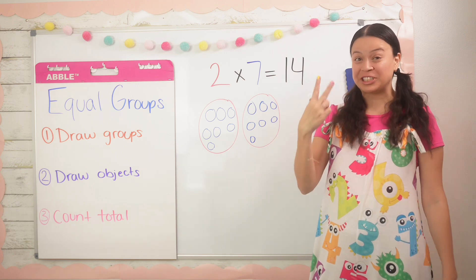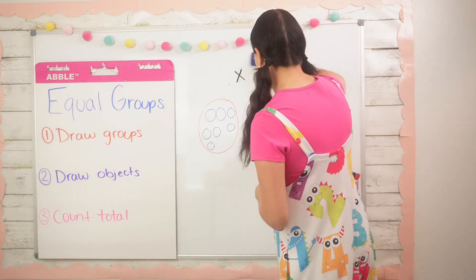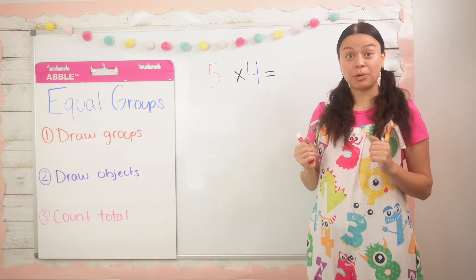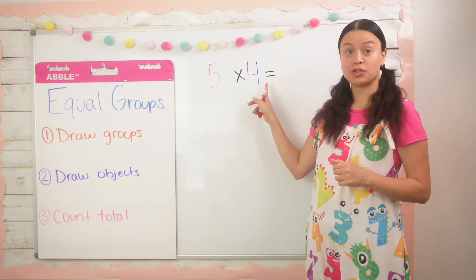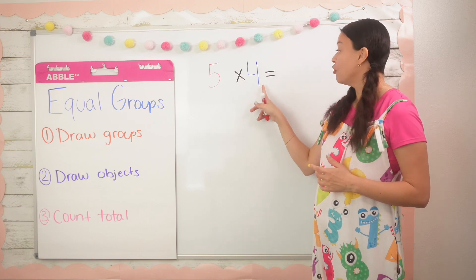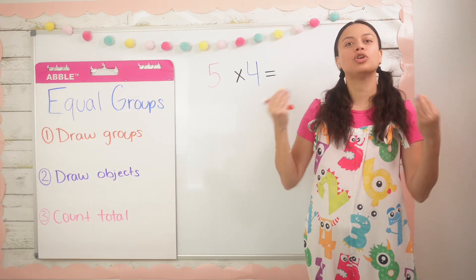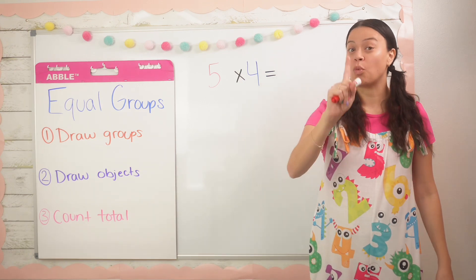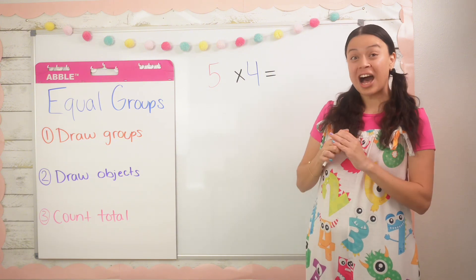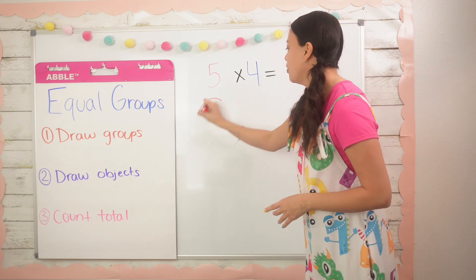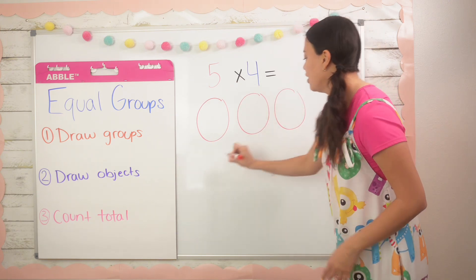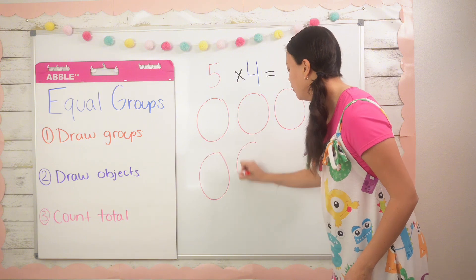All right besties, are you ready for example number two? Let's go. For example number two I have five times four, or five groups of four, and I'm trying to figure out what the total would be. Step number one: I'm going to look at the first factor and draw the number of groups. So in this case I'm going to draw five groups — one, two, three, four, five.